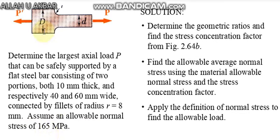Here we have D equals 60 mm, small d equals 40 mm, thickness equals 10 mm, and radius of fillet equals 8 mm. First, we will find D by d and r by d.